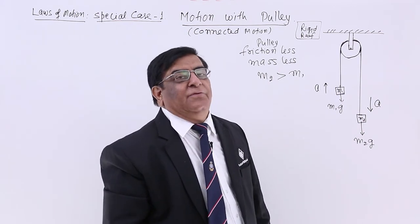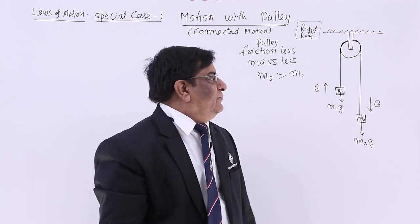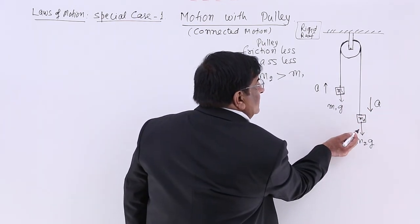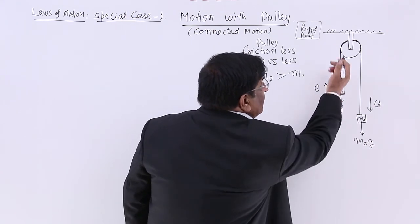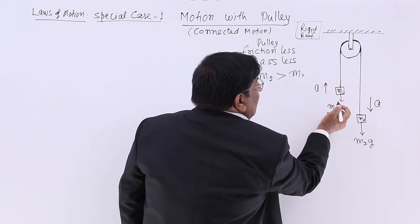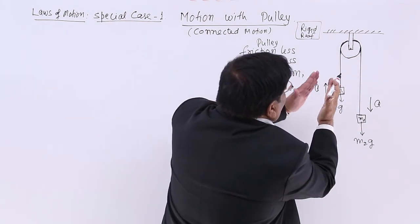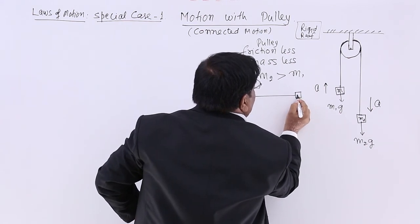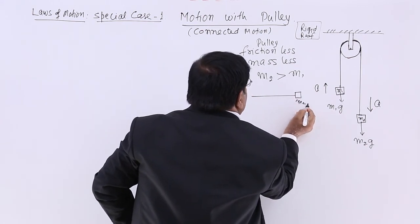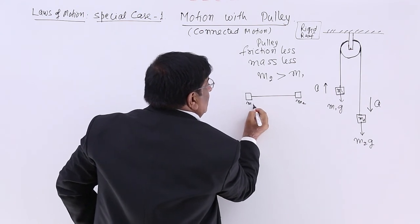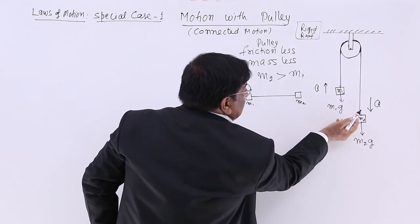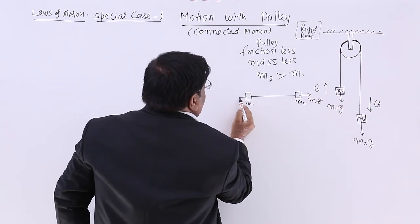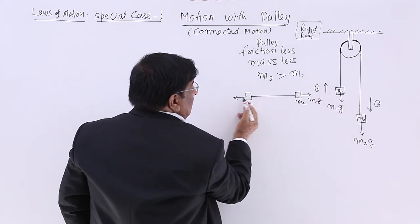Now, is this acceleration equal to G? The answer is no — when we leave an object without any obstruction in free fall, it falls with acceleration G. But here there is a restriction; the string is pulling it back. Therefore the acceleration may not be equal to G. We assume it is A. When M2 tries to come down, M2G acts downward and M1G acts in the other direction.